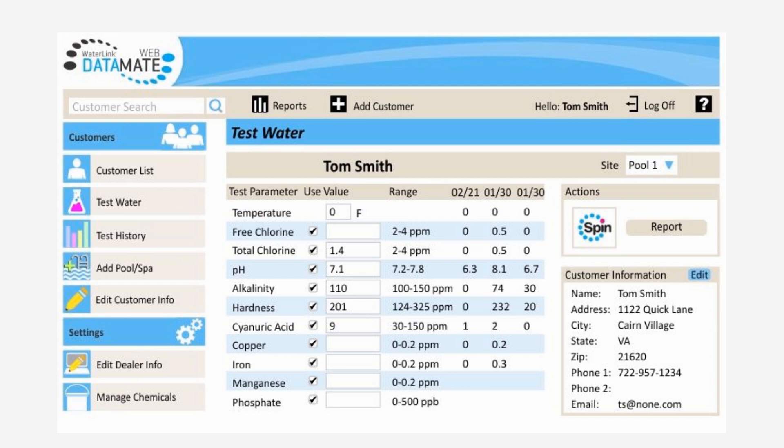These test results go automatically into the analysis software, which calculates exact treatments for that specific pool or spa. The whole process only takes 60 seconds to complete.